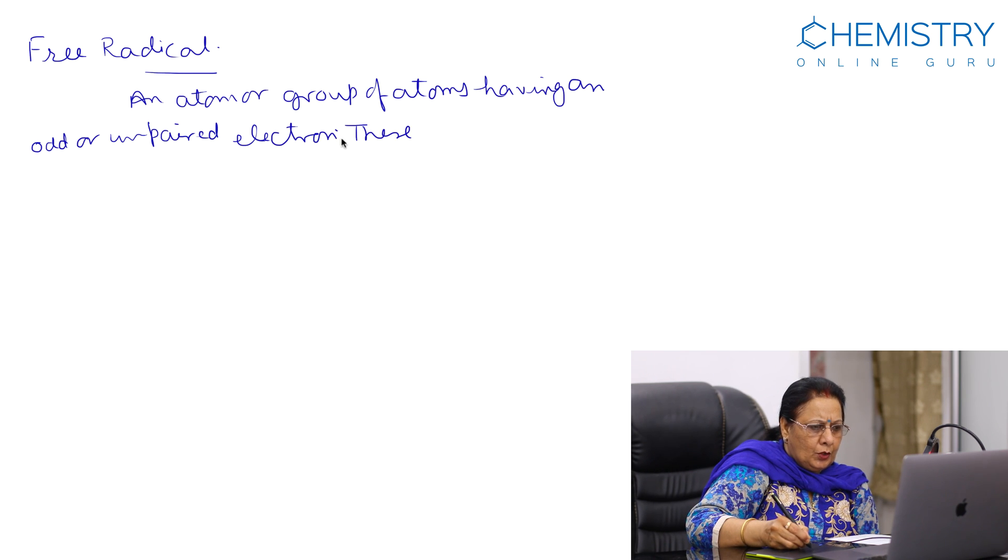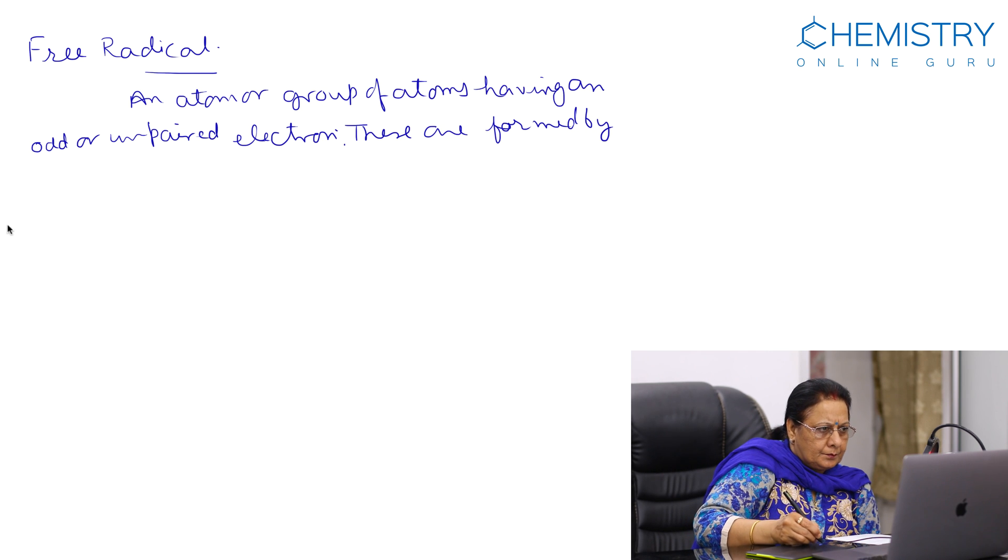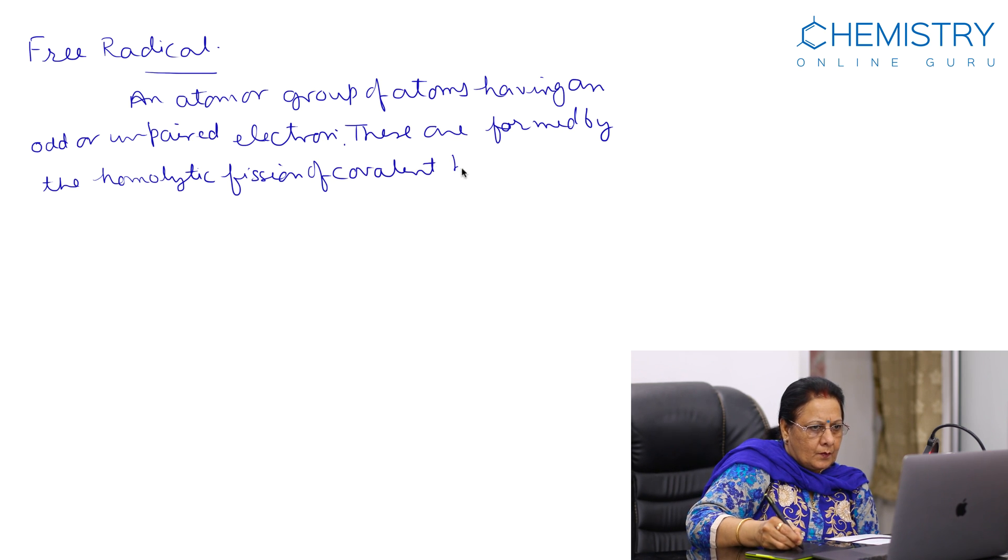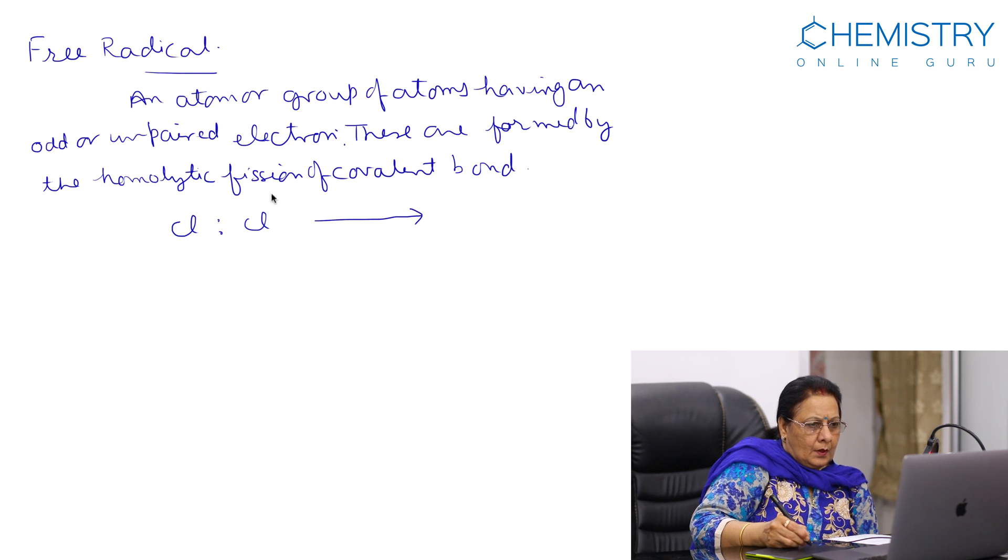These are formed by the homolytic fission of covalent bond, like this. This is a shared electron pair. In presence of sunlight or energy, they split to form free radicals.